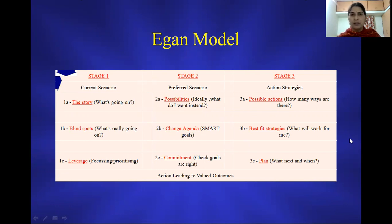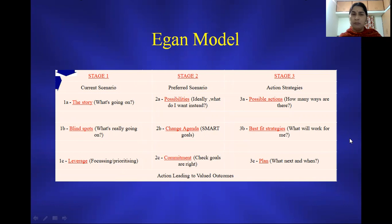When clients come with different kinds of problems related to interpersonal issues, work-life balance, academic stress, or any related problems, one of the simplest and universally applicable models we can apply is the Egan model.